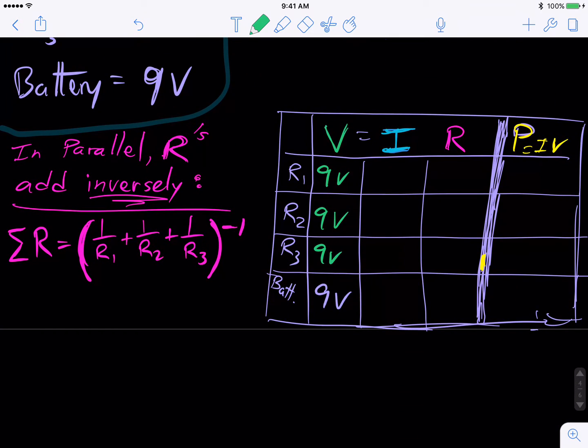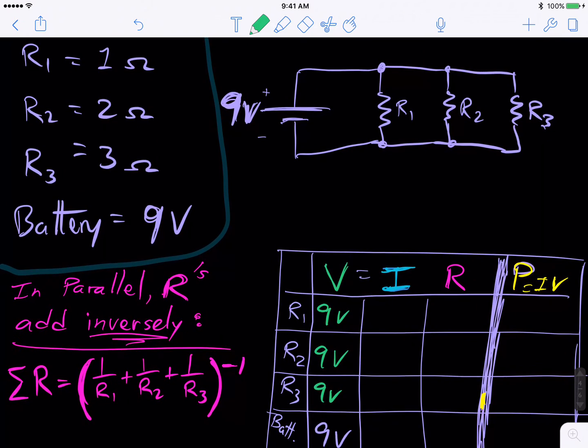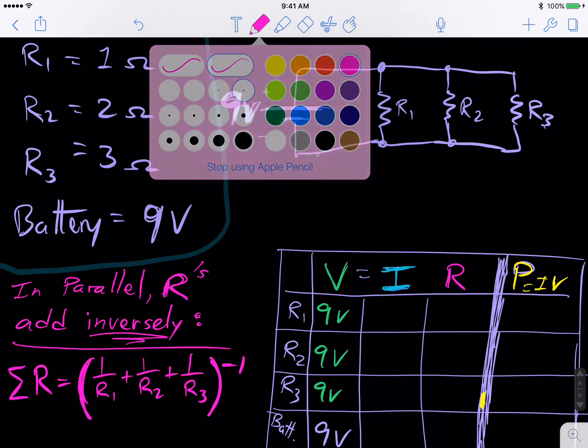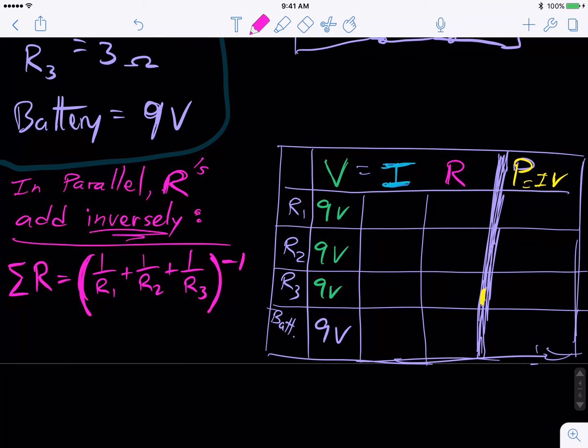That looks ugly, so I'm going to get rid of it. That was easy. Now let's put in the resistances. We have one, two, and three ohms. So let's go ahead and insert those here in our chart. One ohm, two ohms, three ohms.